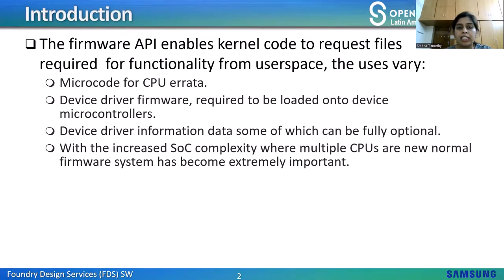Have you wondered how you are able to load device driver firmware onto device microcontrollers or microcode for CPU errata, or get device driver information on calibration data, e-form overrides, etc.? All these are possible due to the firmware API provided in Linux, which enables the kernel to request files for necessary functionality from user space. With increased SOC complexity where multiple CPUs — like NPU and other hardware accelerators — are a new normal, the firmware system has become extremely important.